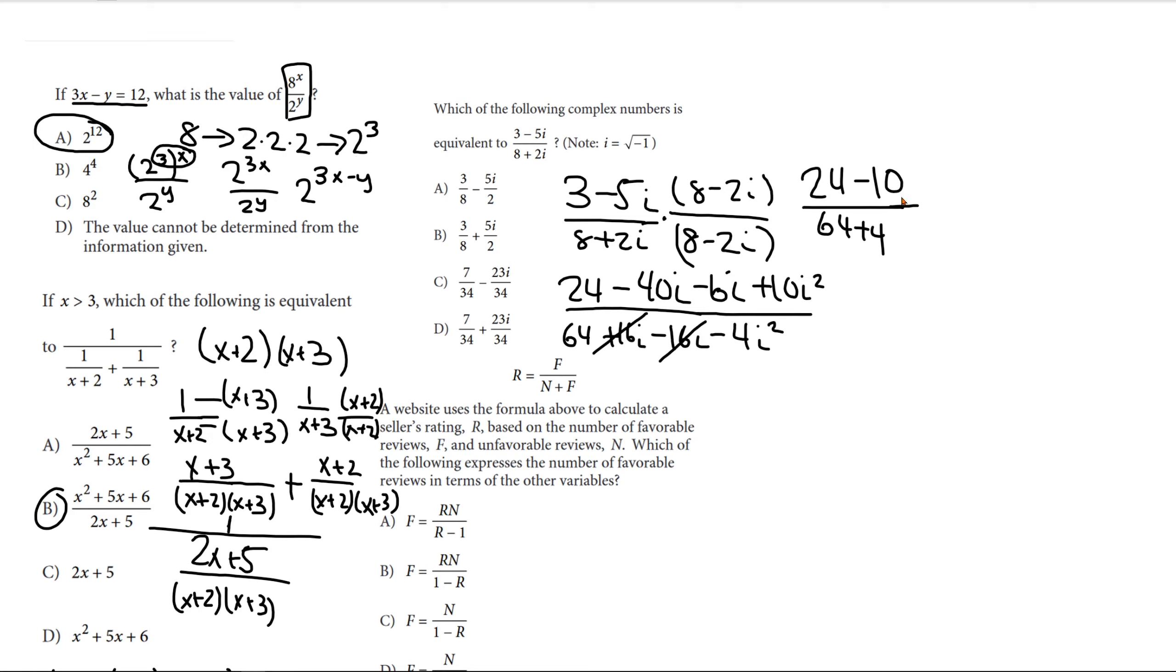Okay, so we have 24 minus 10 over 64 plus 4, which equals 14 over 68. And now, let's do the same thing with the i's. So, we're going to have negative 46i over the same thing, 64 plus 4. And that's equal to negative 46i over 68. So, so far, what we have is 14 over 68 minus 46i over 68.